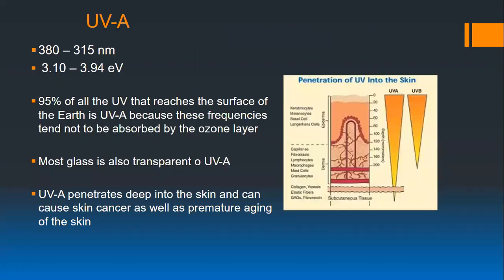UVA makes up 95% of all the ultraviolet light that makes it through the atmosphere and through the ozone layer. These frequencies are not absorbed as much by the ozone layer, most glass is transparent to UVA, and it penetrates deep into the skin. UVA causes skin cancer and premature aging — that's what you really want to block with sunscreen.